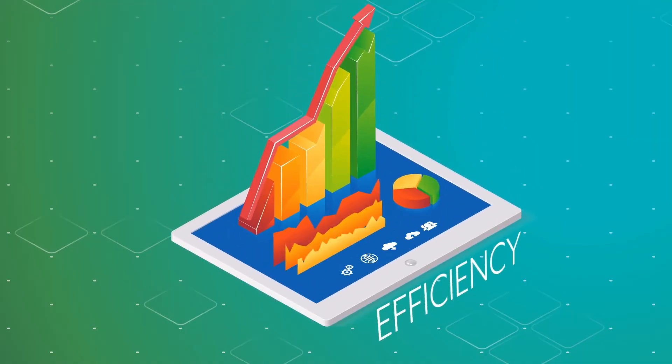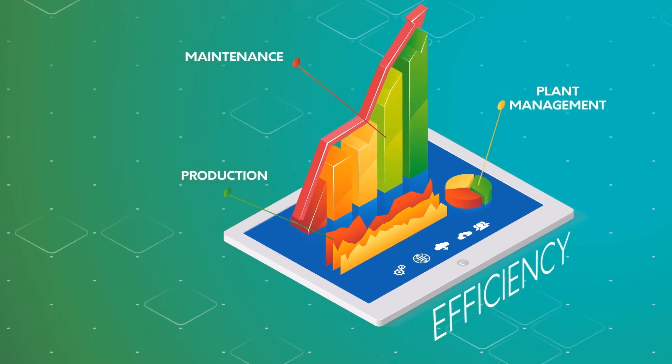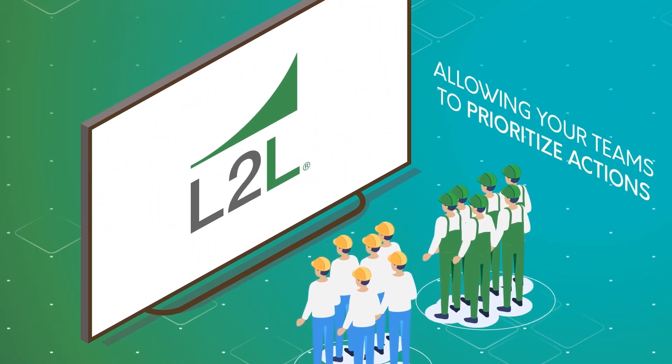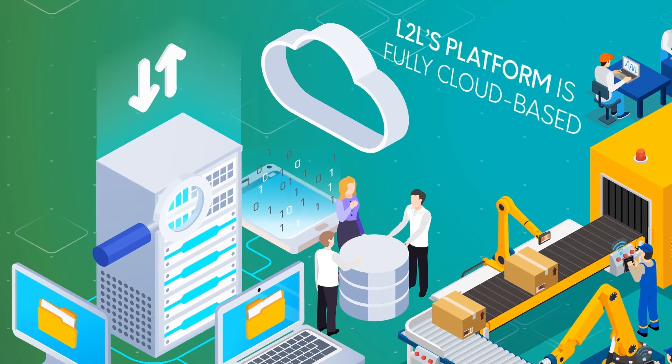L2L identifies and eliminates waste across maintenance, production, and plant management, allowing your teams to prioritize actions that improve your production throughput.